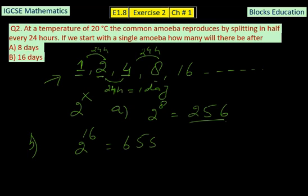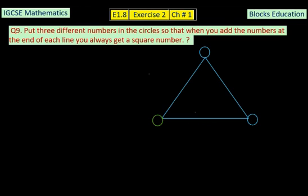In question number 9, it says put three different numbers in the circles so that when you add the numbers at the end of each line you always get a square number.